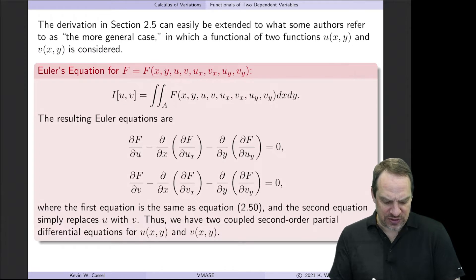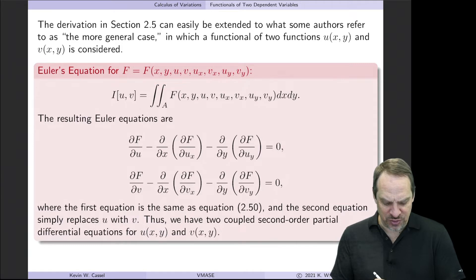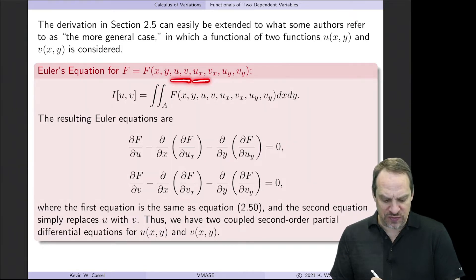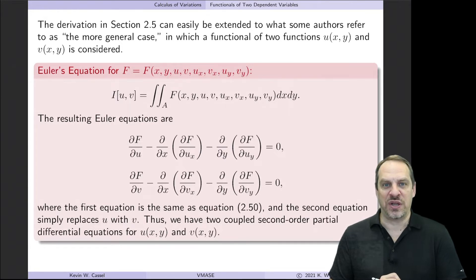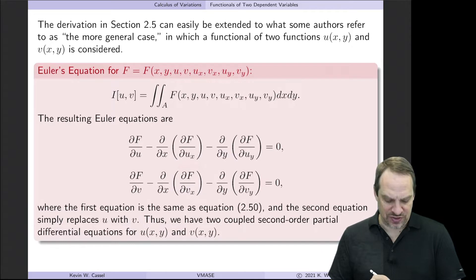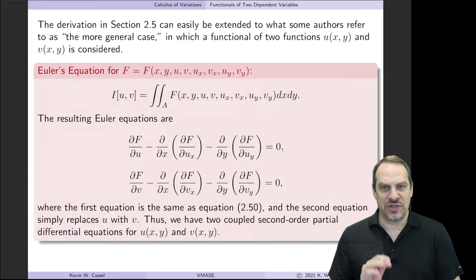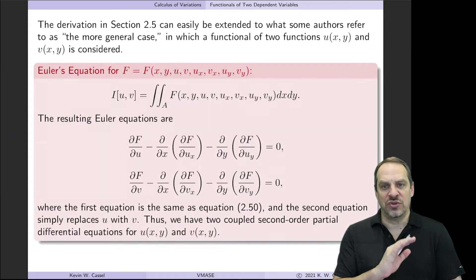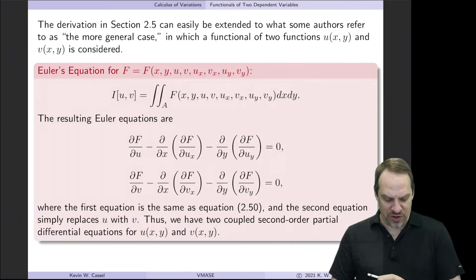So let's say we have a functional where the integrand is a function of x and y — two independent variables — and u and v, the two dependent variables, along with first derivatives of u and v with respect to x and y. In that case, you get the Euler equation we had before: ∂f/∂u − ∂/∂x(∂f/∂u_x) − ∂/∂y(∂f/∂u_y) = 0. That's exactly the same Euler equation we had previously for the case with two independent variables and one dependent variable.